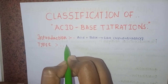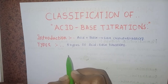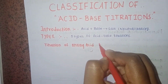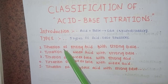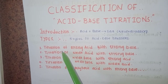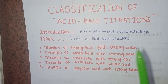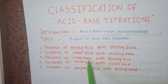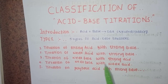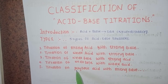Types are mainly classified into five types. The five types are: first, titration of strong acid with strong base; second, weak acid with strong base; third, weak base with strong acid; fourth, weak base with weak acid; and fifth, titration of polybasic acid with strong base.